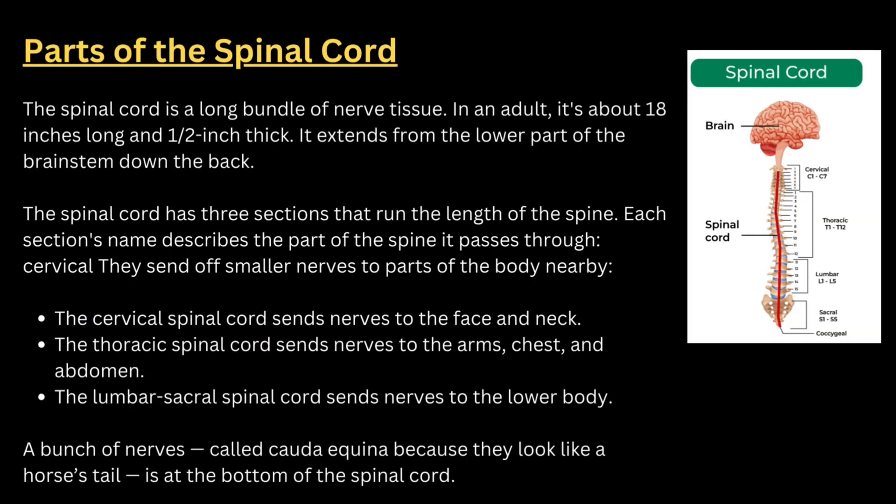The spinal cord is a long bundle of nerve tissue. In an adult, it is 18 inches long and half an inch thick, running from the brainstem down towards the neck. The spinal cord has three sections: the cervical spinal cord, thoracic, and the lumbar-sacral spinal cord. The cervical spinal cord sends nerves to the face and neck; thoracic sends nerves to the arms, chest, and abdomen; and lumbar sends nerves to the lower body.